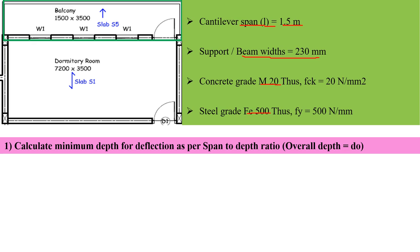Now let's calculate the minimum depth, the overall depth, as per the deflection formula. The formula says span upon 10. So span is 1500 mm divided by 10, giving us a value of 150 mm.